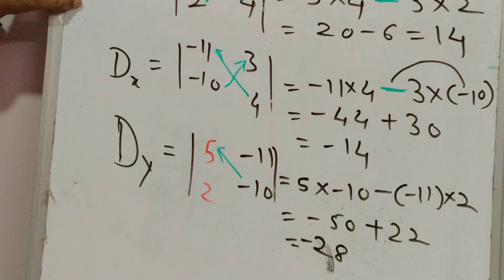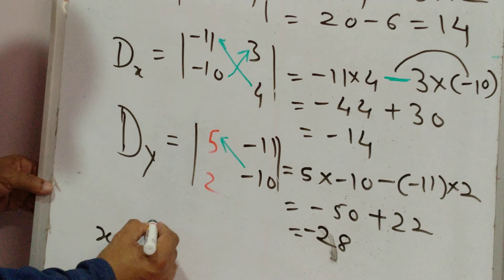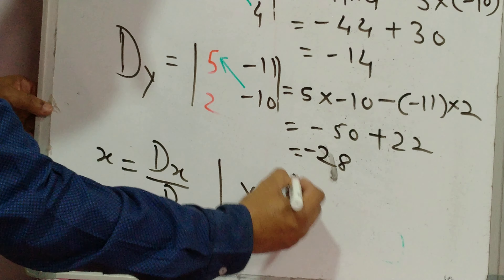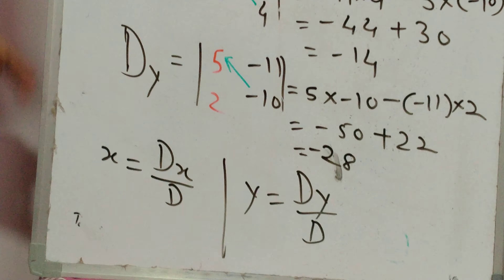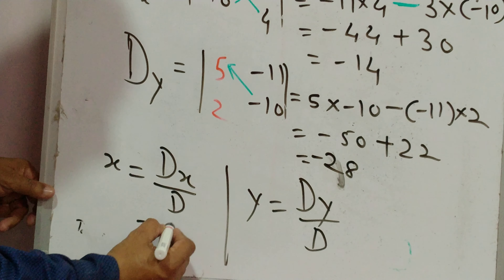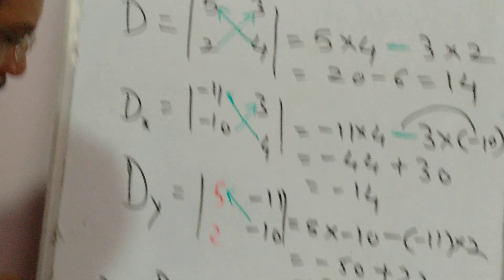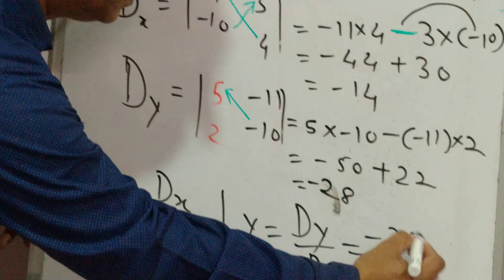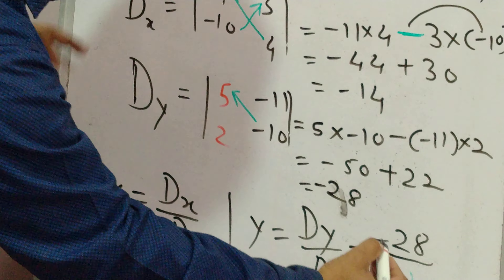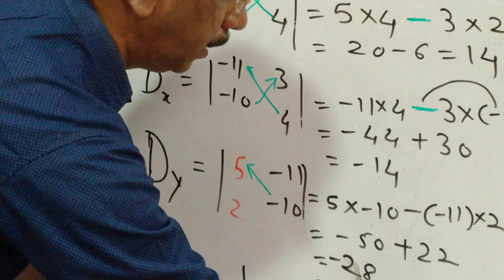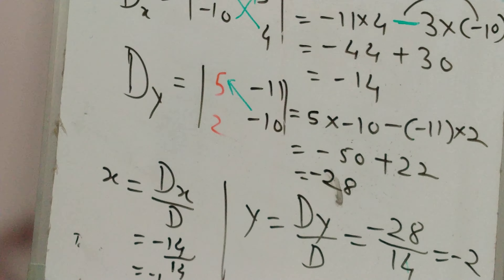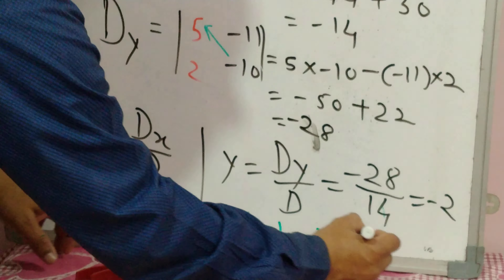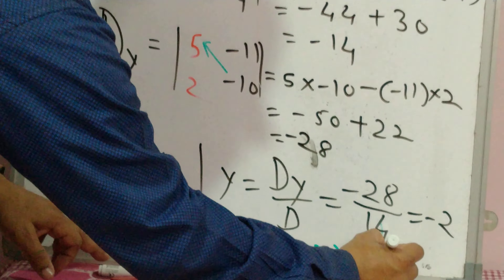After getting these three values, write: x equals D of x divided by D, and y equals D of y divided by D. So x equals minus 14 divided by 14 equals minus 1. And y equals minus 28 divided by 14 equals minus 2. Notice that the answer is the same as before: minus 1 and minus 2. You can write it as the solution.